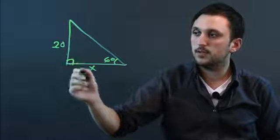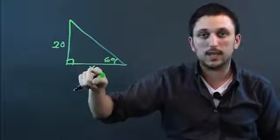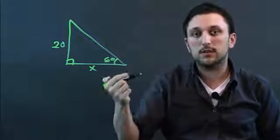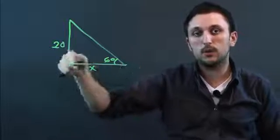So what we have to say is, well, we know the opposite is 20 and the adjacent is x, and opposite over adjacent is tangent. Remember SOHCAHTOA, so TOA, opposite over adjacent.